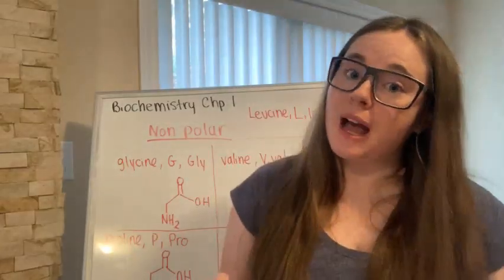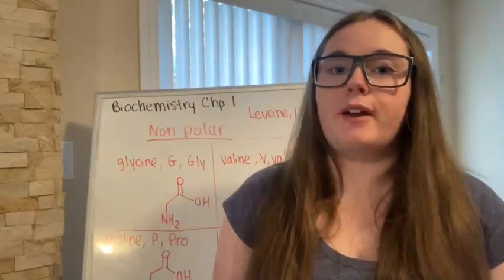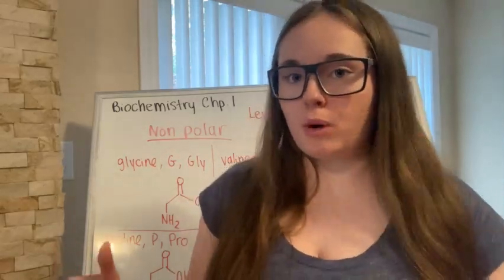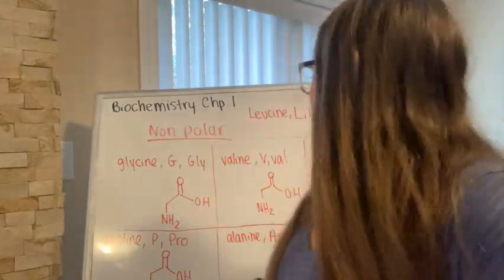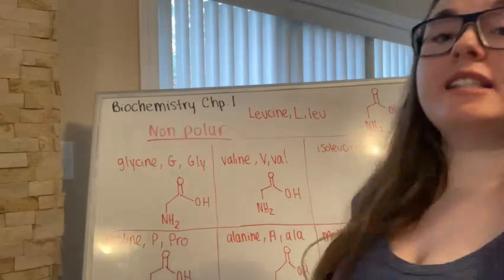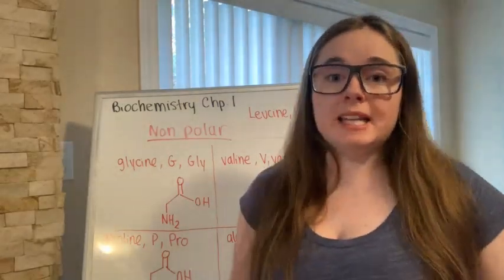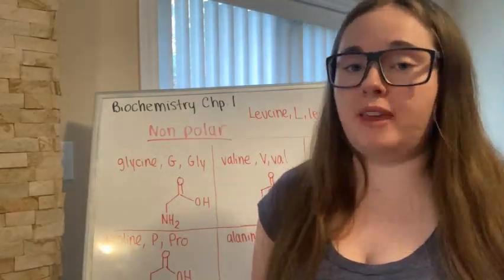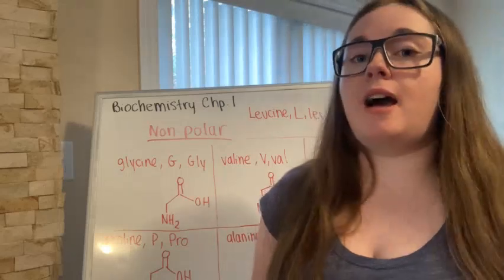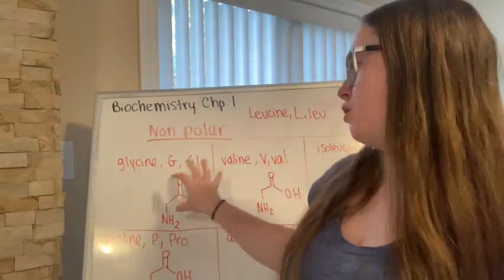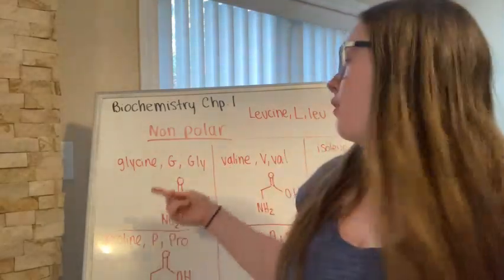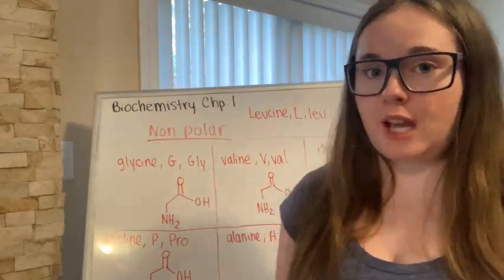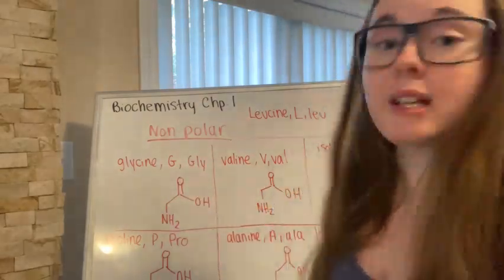Let's continue on with our amino acids. First we're going to start with our non-polar amino acids, and there are seven of those. It is very important to know all of the structures of the amino acids for the MCAT — their full names, their structures, their properties, their one-letter abbreviations, and their three-letter abbreviations.